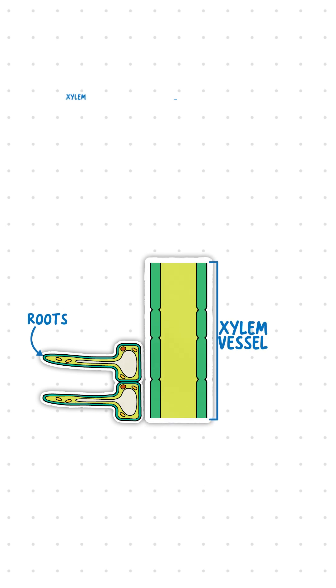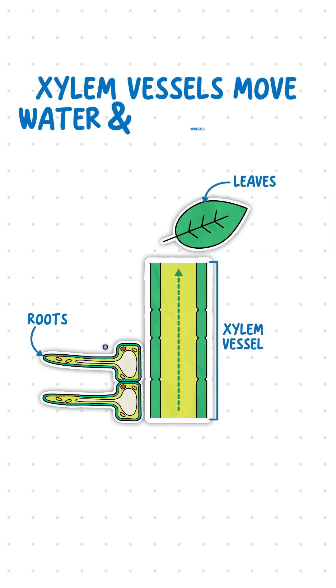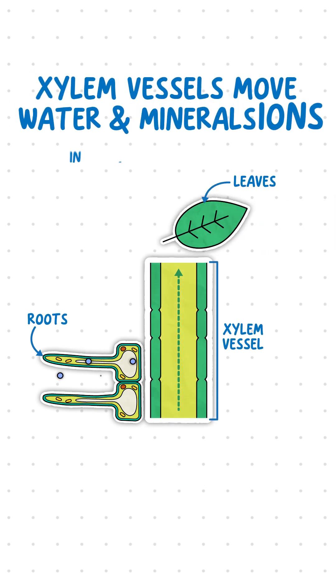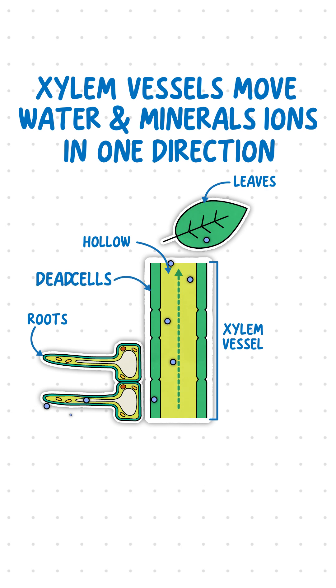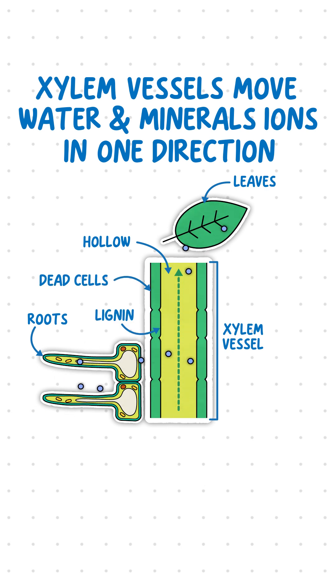Xylem vessels move water and mineral ions in one direction, from the roots to the leaves, through a hollow tube of dead cells reinforced by lignin.